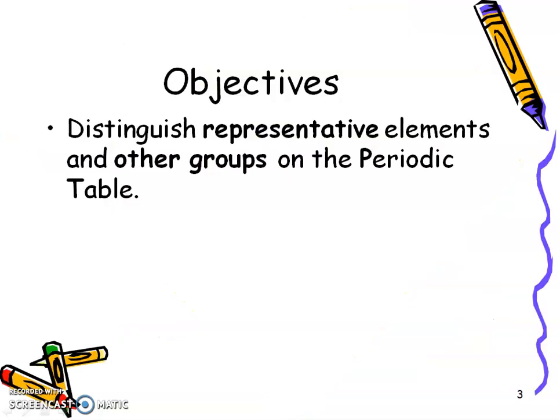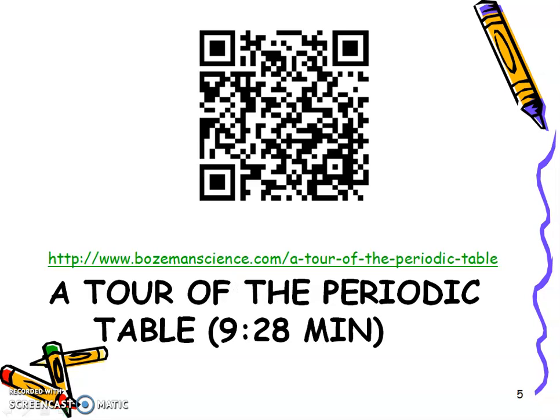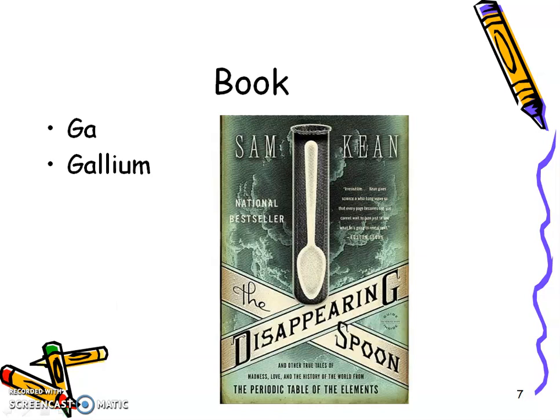In this section, you're going to distinguish representative elements and other groups on the periodic table. So you should have watched that intro information on a tour of the periodic table. Here are my notes, and as usual, I'm just going to go through them quickly.